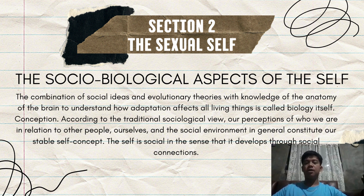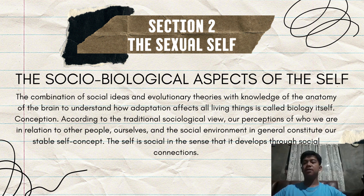Section 2: The Sexual Self — The Sociobiological Aspects of the Self. The combination of social ideas and evolutionary theories with knowledge of the anatomy of the brain to understand how adaptation affects all living things is called sociobiology. According to the traditional sociological view, self-conception is our perception of who we are in relation to other people, ourselves, and the social environment. Our stable self-concept develops through social connection.